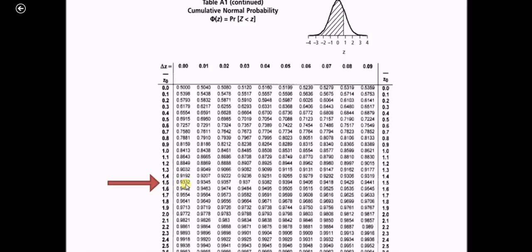But actually, we have to find out in this example what is the probability that z is greater than 1.5. So let us see how to find out that particular thing.